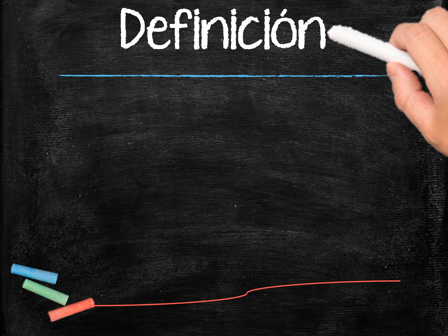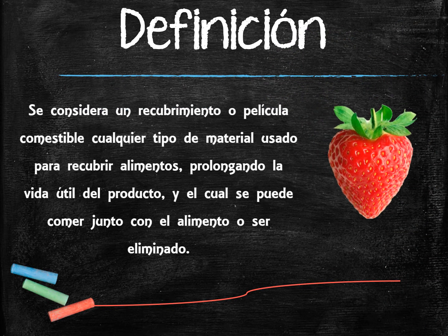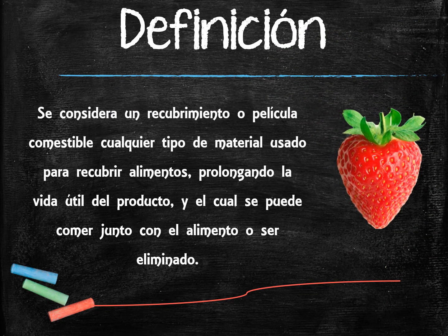What are edible films and coatings? Any type of material used for enrobing — that is, coating or wrapping various food to extend shelf life of the product — that may be eaten together with food, with or without further removal, is considered an edible film or coating.